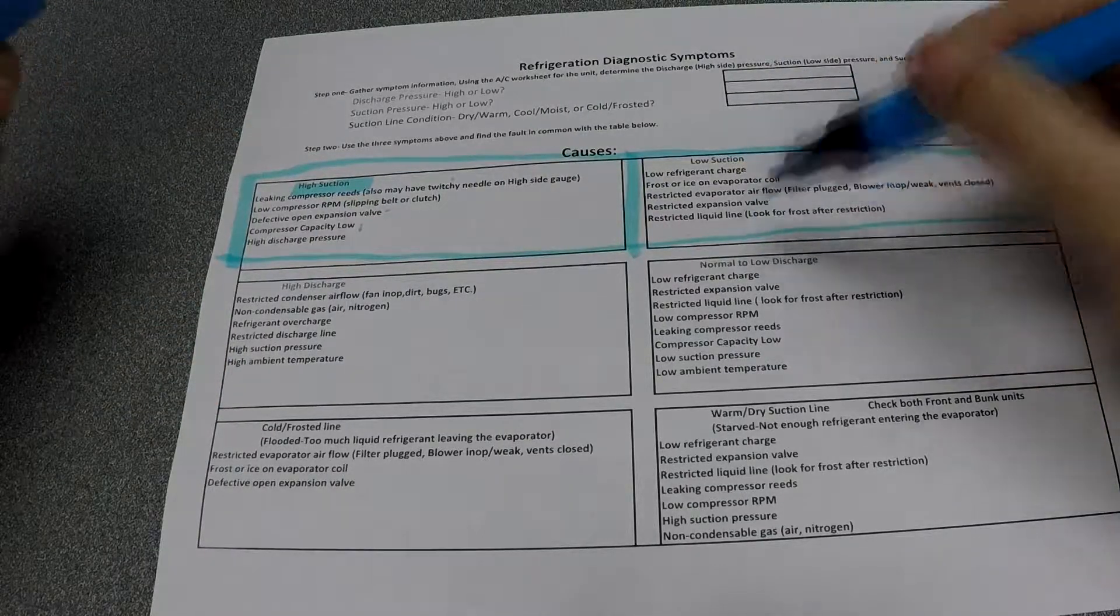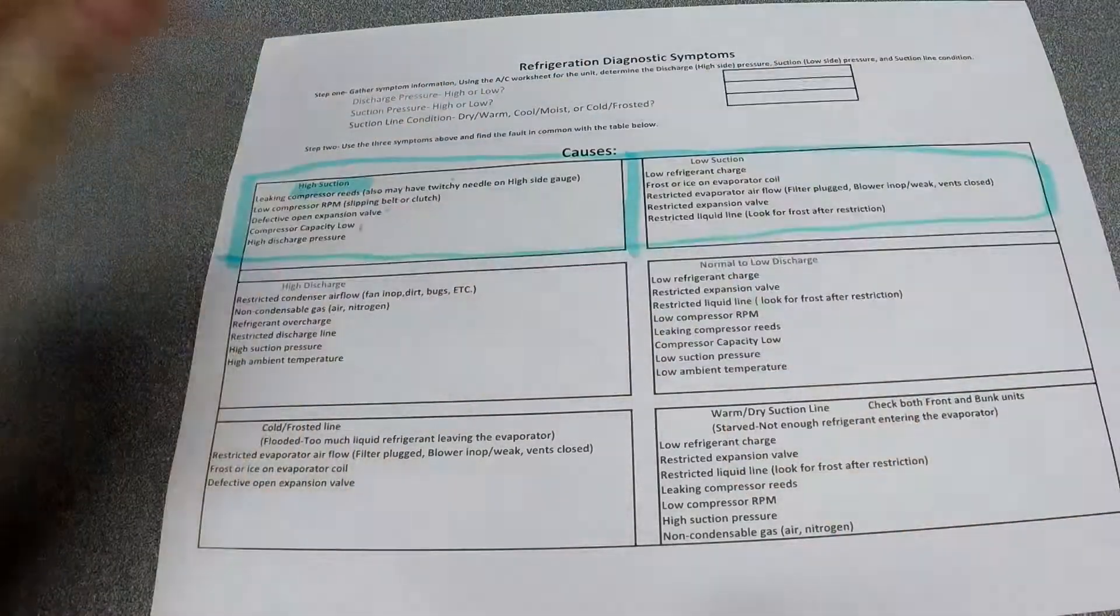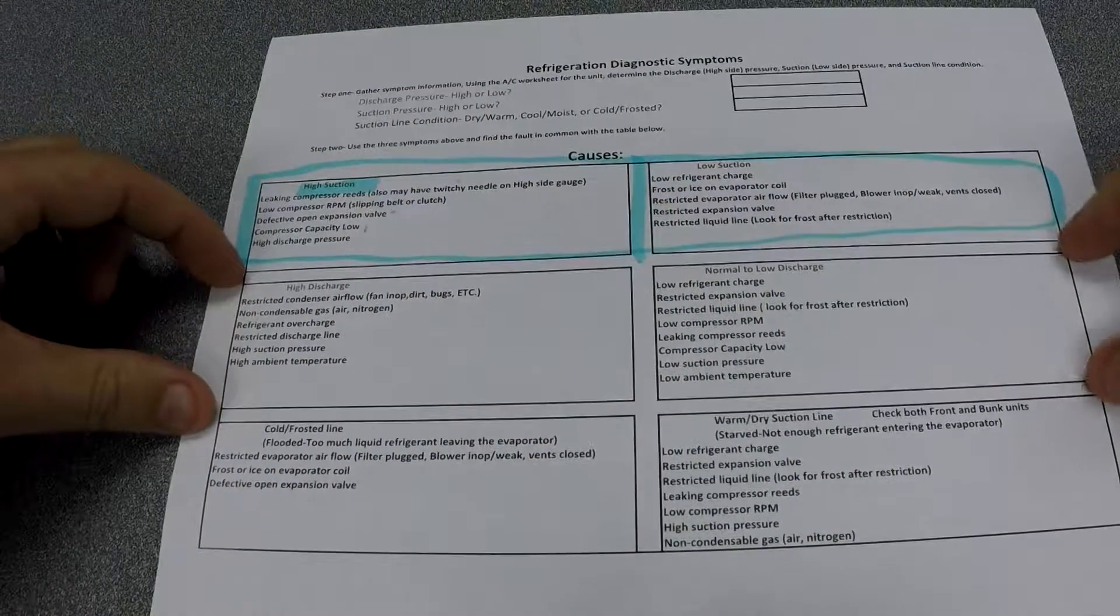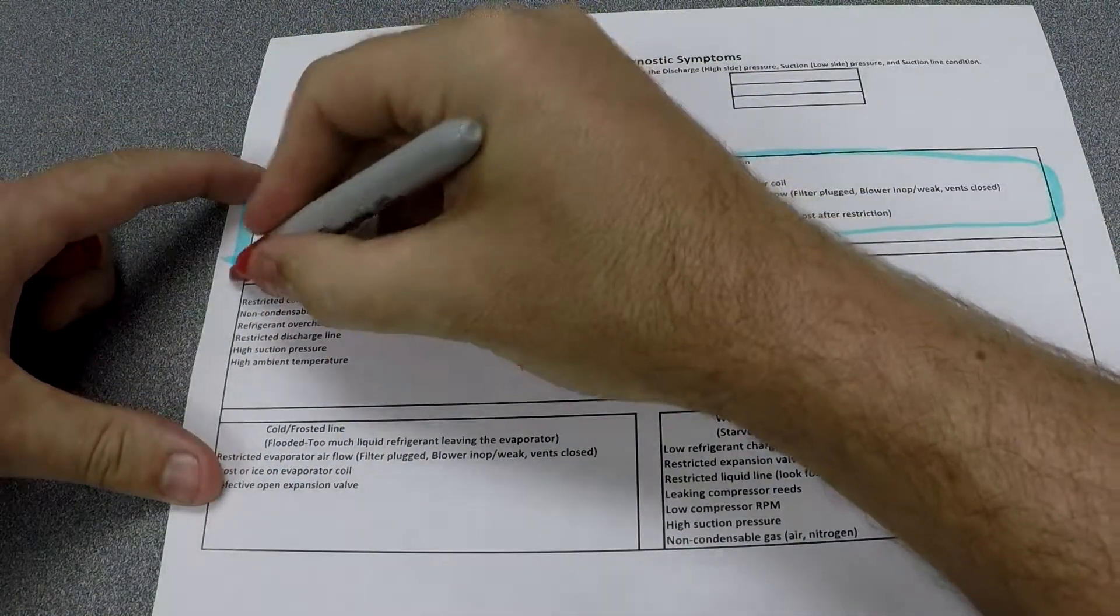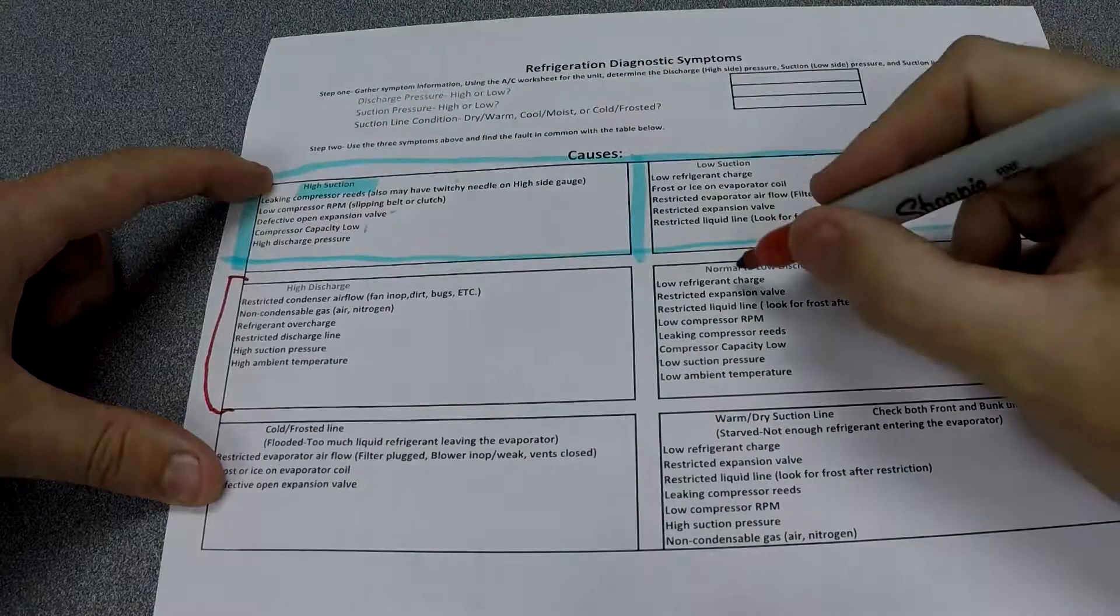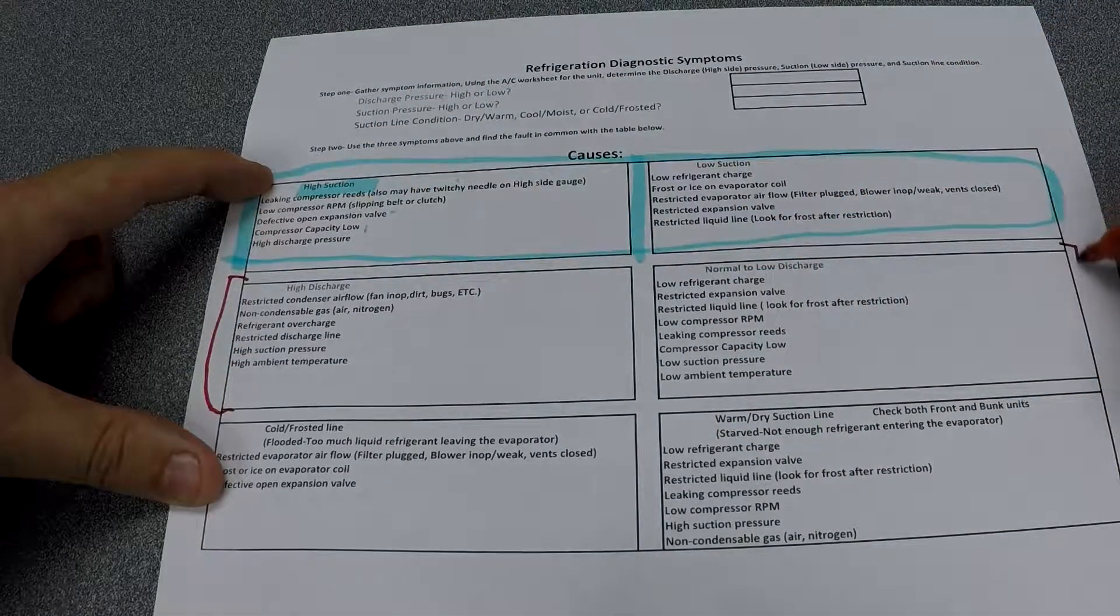The next two boxes talk about discharge. On this side you can see high discharge pressure. On this side you can see normal to low discharge pressure.